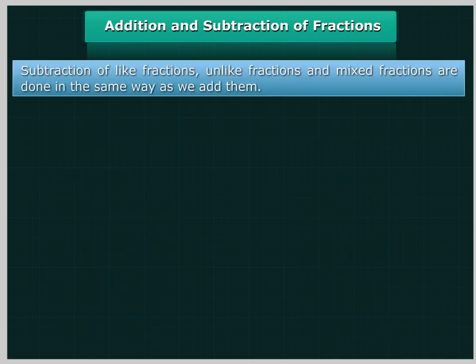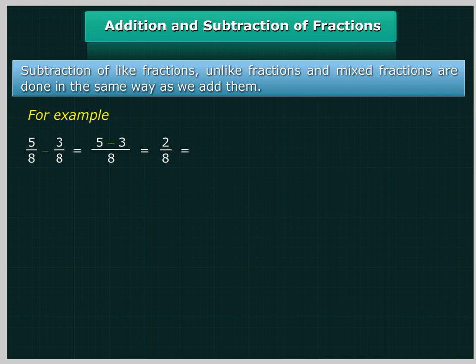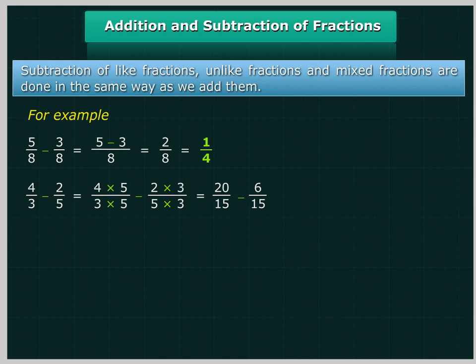Subtraction of like fractions, unlike fractions, and mixed fractions are done in the same way as addition. For example, 5 upon 8 minus 3 upon 8 is equal to (5−3) upon 8, which is equal to 2 upon 8, equal to 1 upon 4. Also, 4 upon 3 minus 2 upon 5 is equal to (4×5)/(3×5) minus (2×3)/(5×3), which is 20 upon 15 minus 6 upon 15, equal to 14 upon 15.